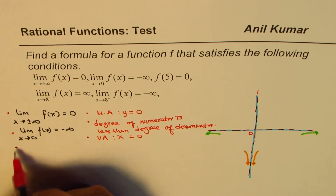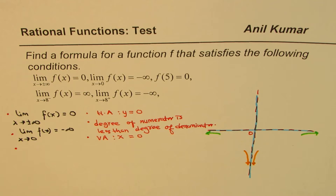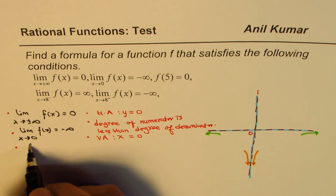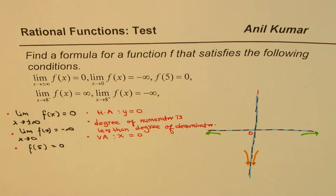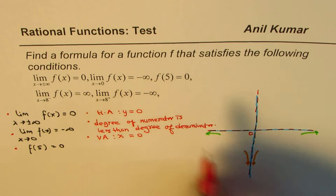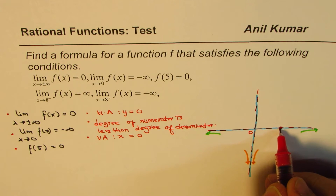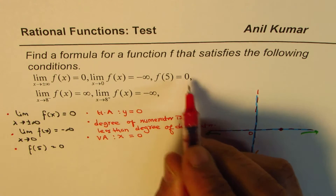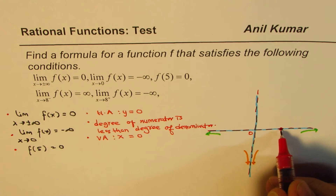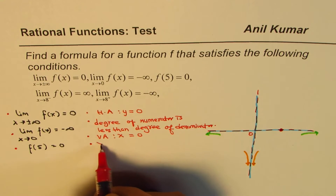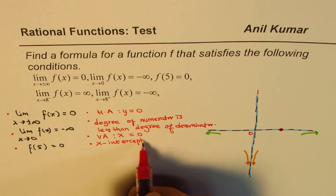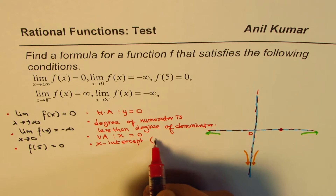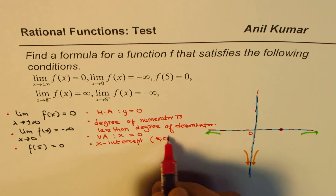The third condition is f of 5 equals 0. That means we have a point where the function equals 0 at x equals 5 — this is the x-intercept at the point (5, 0).